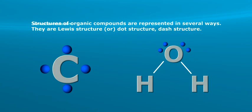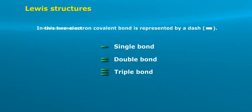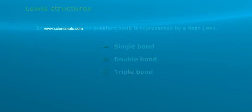They are Lewis structure or dot structure, and dash structure. In Lewis structures, two electron covalent bond is represented by a dash: single bond, double bond, triple bond.